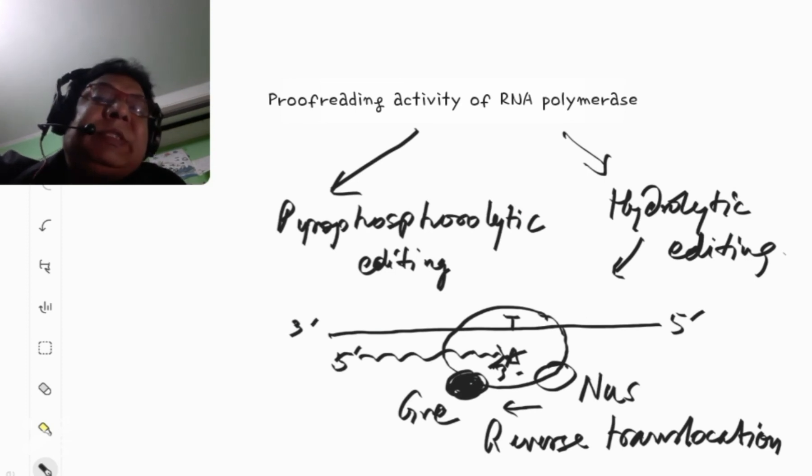So, this is how RNA polymerases, by using these two methods, it gets rid of the incorrect bases that get incorporated. This is not the thing that we mentioned about RNA editing, post-transcriptional RNA editing. This is not that. Post-transcriptional RNA editing occurs after transcription. And this is occurring when transcription is going on. So, this is different. This is proofreading.